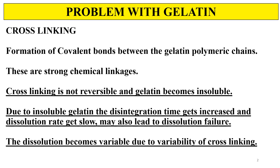Crosslinking is the formation of covalent bonds between the gelatin polymeric chains — that is, the peptide chains. These are strong chemical linkages. Gelatin crosslinking is not a reversible process; it is irreversible. Due to this crosslinking, the gelatin becomes insoluble, and the disintegration time gets increased for the formulation.